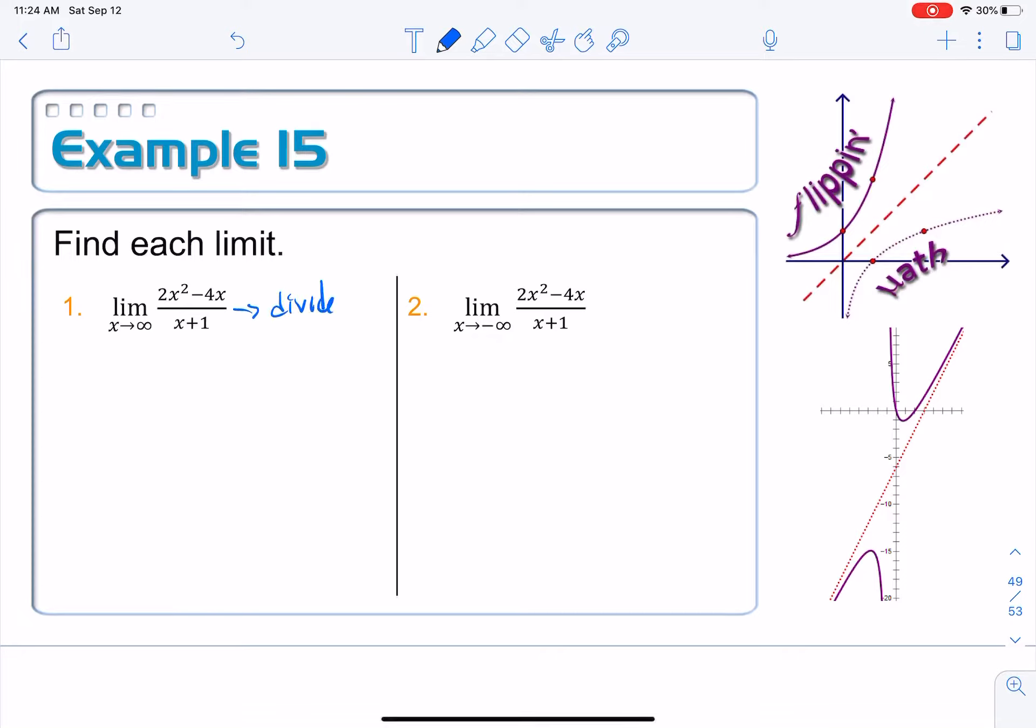I can divide this by synthetic division. I just put a negative one on the outside of that box. And then on the inside, I need a two for the x squared, a negative four, and the constant term is a zero. Bring down the two, multiply by negative one, I get a negative two. Add them, negative six. Multiply, I get a positive six. And then gives me six left over as the remainder. In other words, this function here, its equivalent form is the limit as x approaches infinity of two x minus six plus a six over the divisor, which was x plus one.